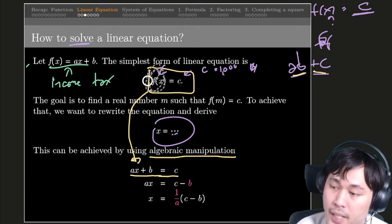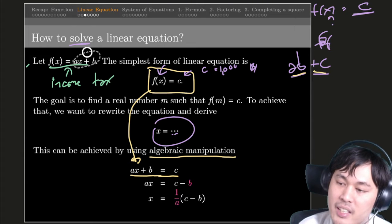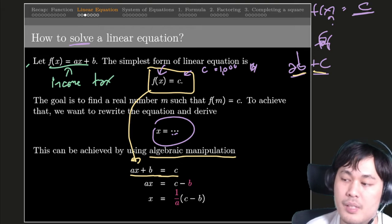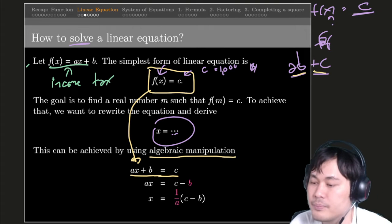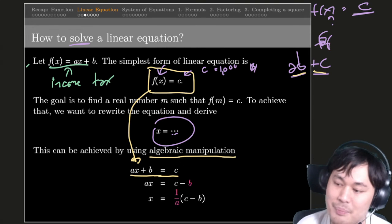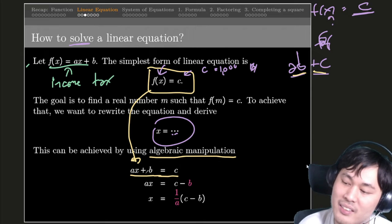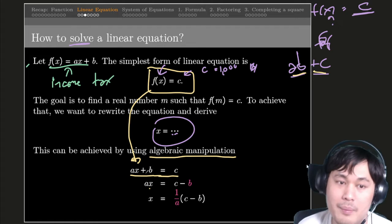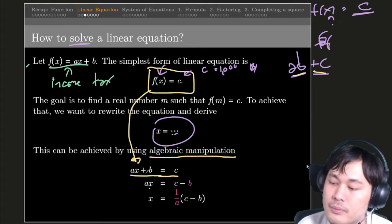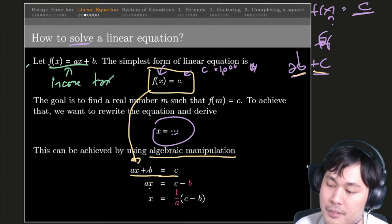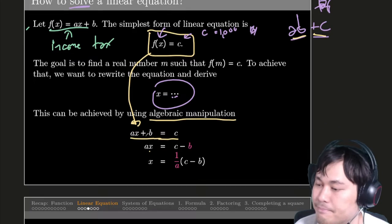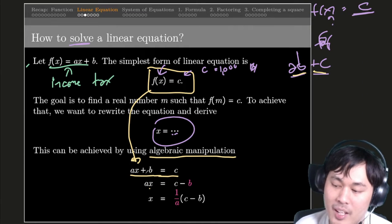We replace f(x) on the left-hand side by what it is defined as, ax plus b. You can see the spoiler here: you can move b to the right and get ax equals c minus b. And then you divide both sides by a to get x equals 1 over a times (c minus b). But let me add another step here — this is what you do if you already know what's going on.